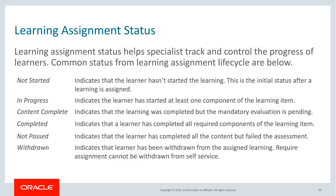Learning assignment status helps specialists track and control the progress of learners. Assignments have a lifecycle from when they are assigned to when they are completed. 'Not Started' is the initial status after learning is assigned. It moves to 'In Progress' when a learner starts the learning by accessing the content. 'Content Complete' is when all learning is completed and pending mandatory evaluation. 'Not Passed' indicates the learner did not achieve the minimum score on the assessment. 'Completed' is when all learning and any mandatory evaluation are finished. 'Withdrawn' indicates the learner has been withdrawn; required assignments cannot be withdrawn from self-service.